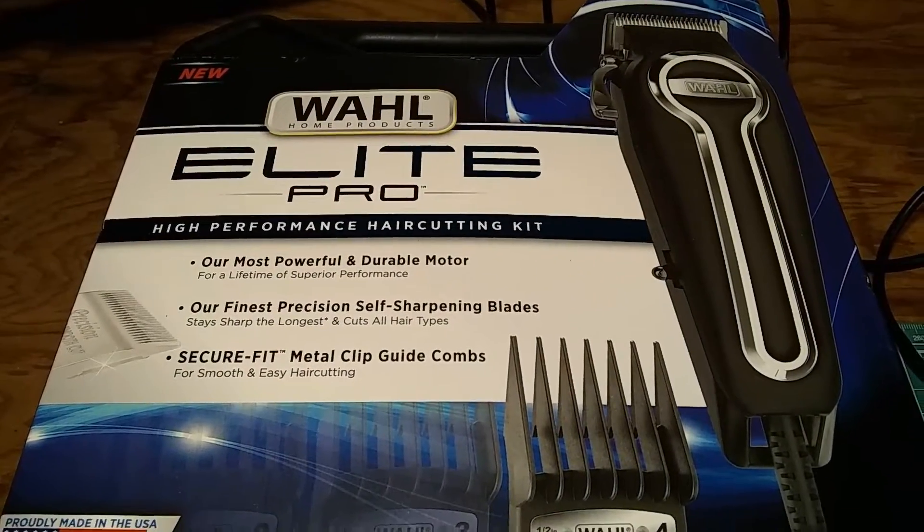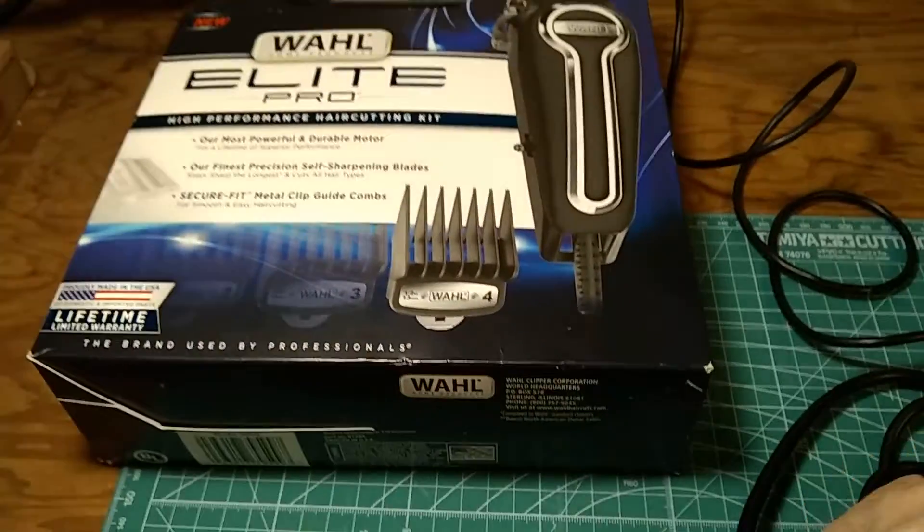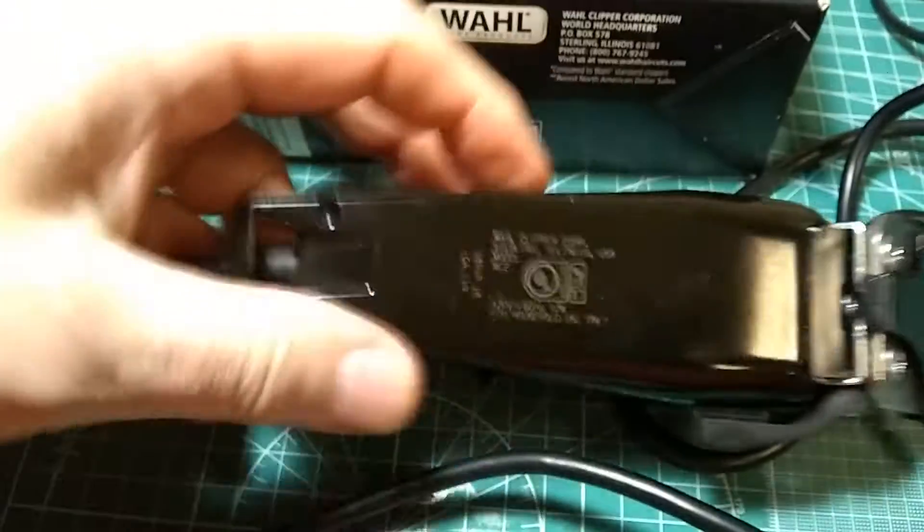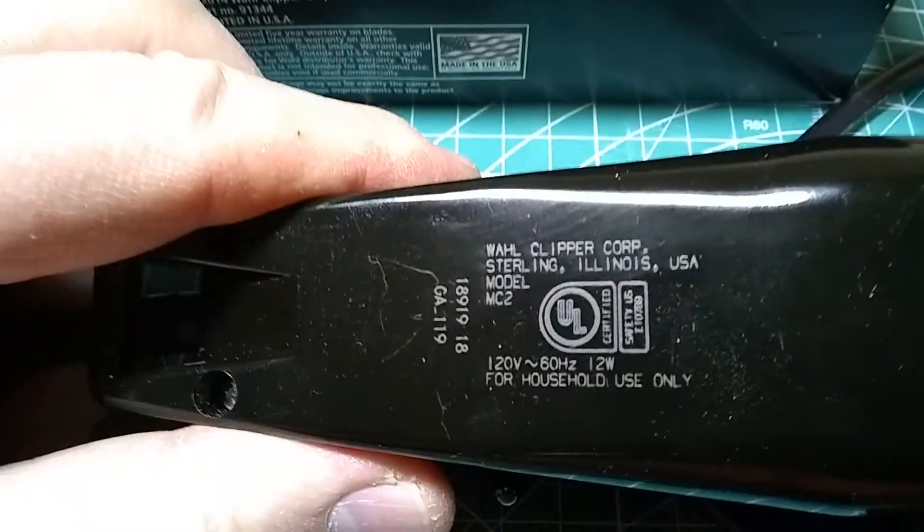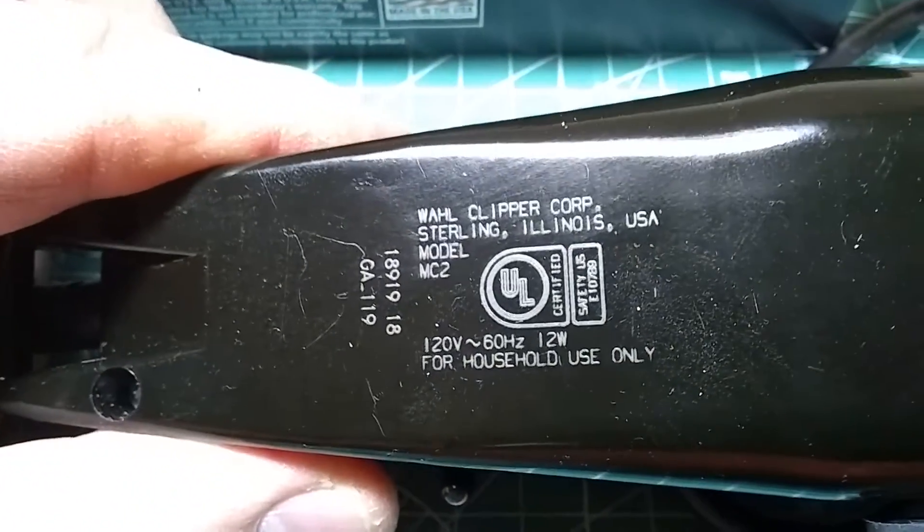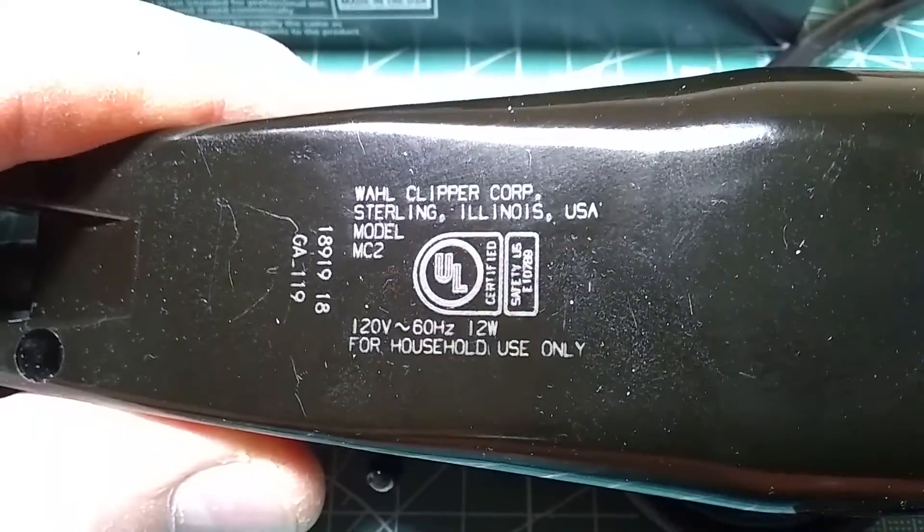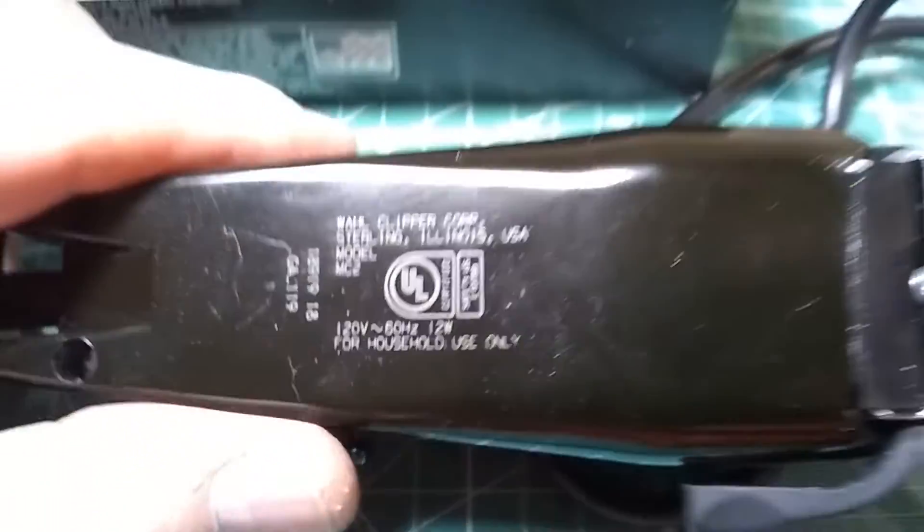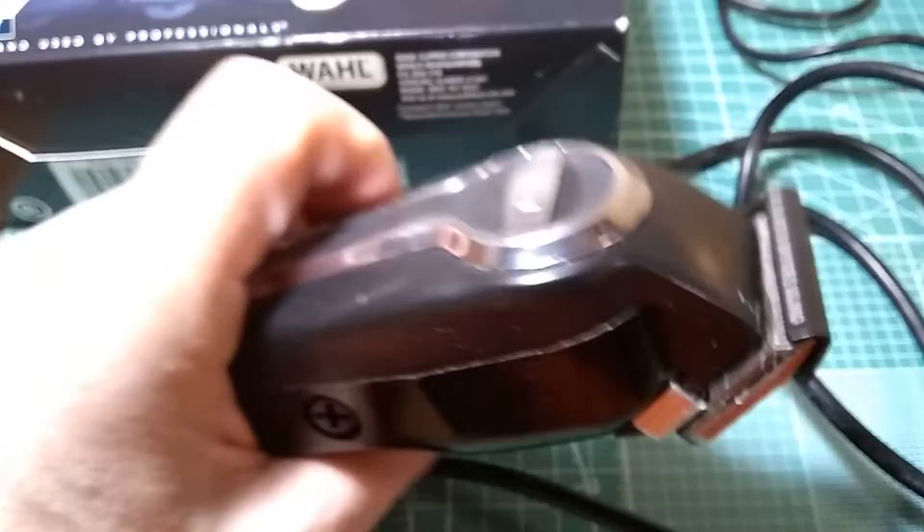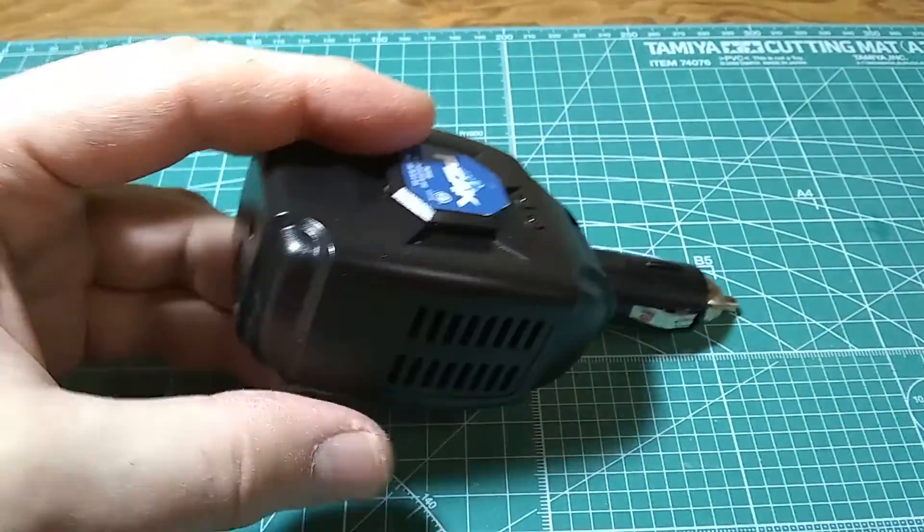These are very nice clippers. When you look at the label here, you'll find that these are 12 watts, 60 Hertz, 120 volts. Now, what if you take these to Europe? For the price of about $15 to $20, you can purchase one of the car adapters that will give you the local AC voltage.